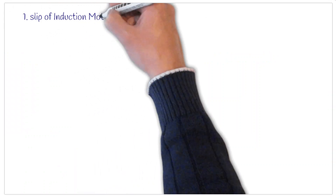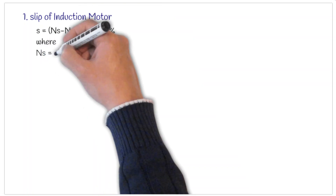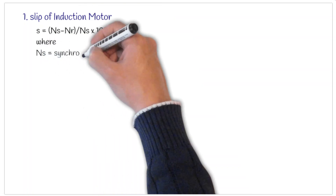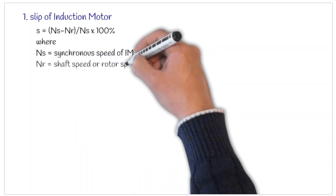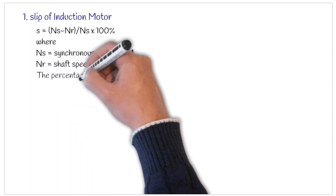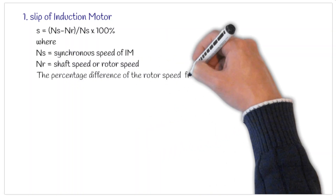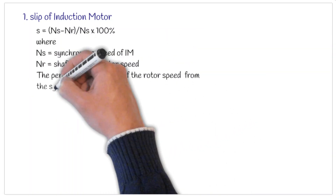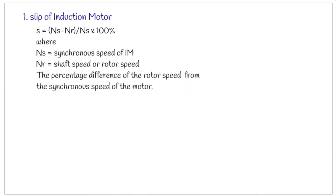Before we understand the equivalent circuit of the induction motor we need to understand two more things. One is the slip of the induction motor. Slip actually represents the percentage difference of the rotor speed from the synchronous speed of the induction motor, where Ns is the synchronous speed and Nr is the rotor speed, given by the equation (Ns minus Nr) over Ns. We will see how this plays a role in the equivalent circuit of the induction motor.